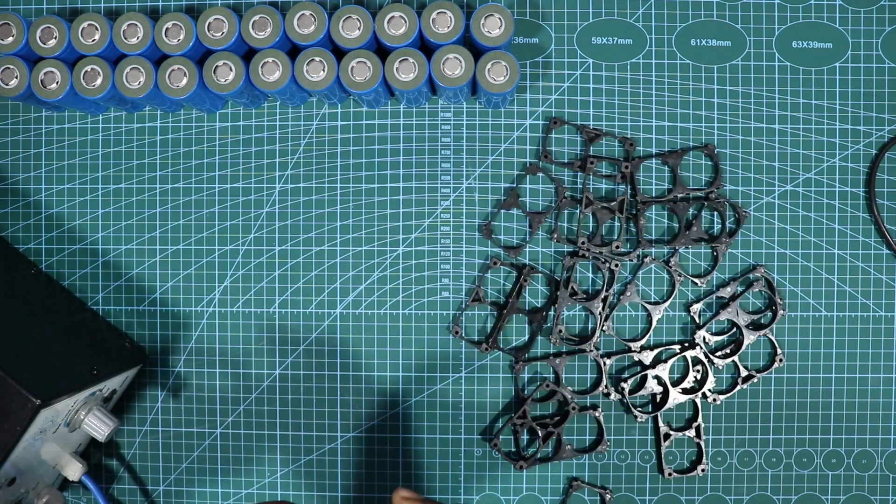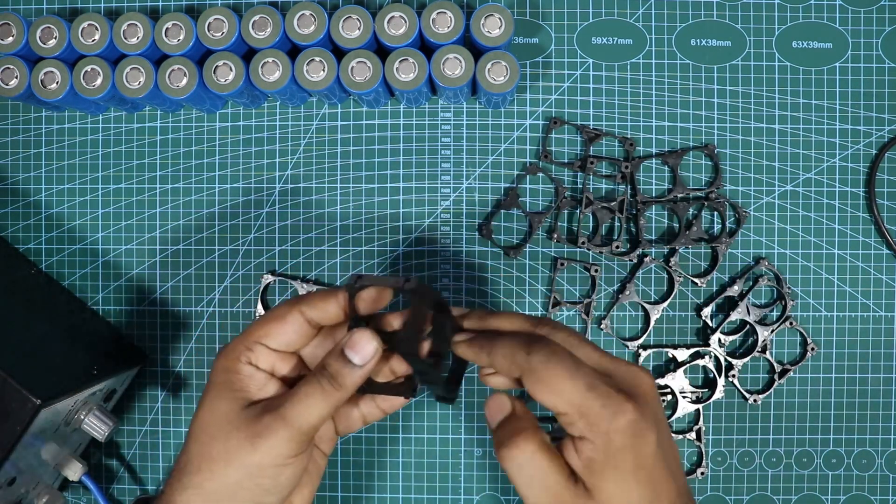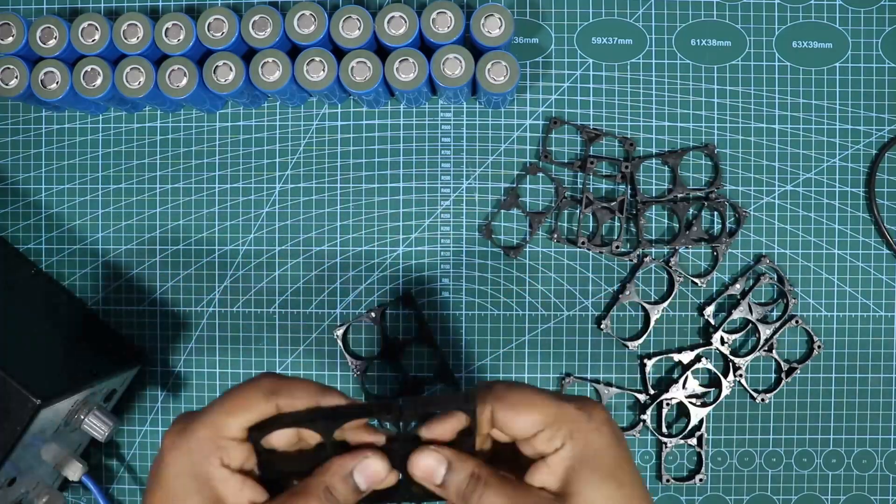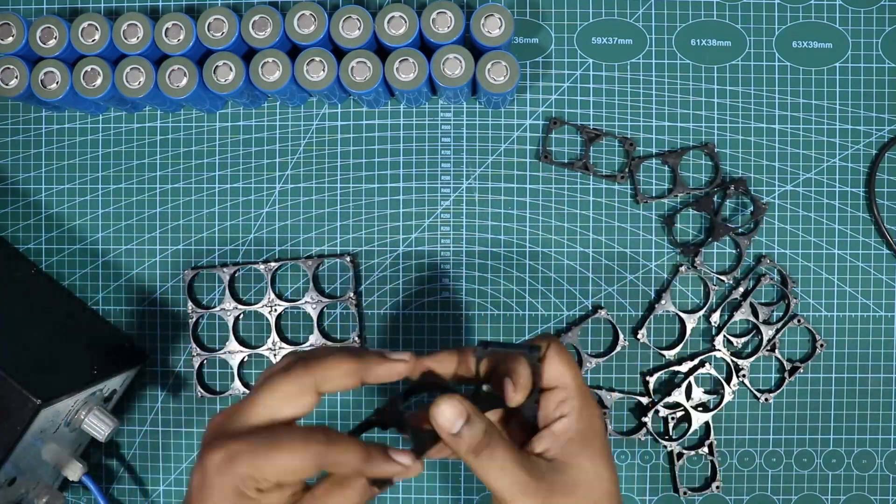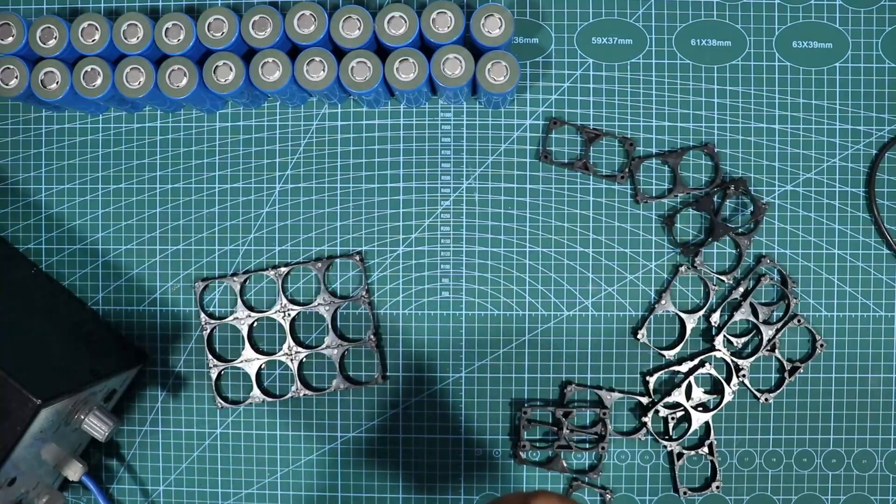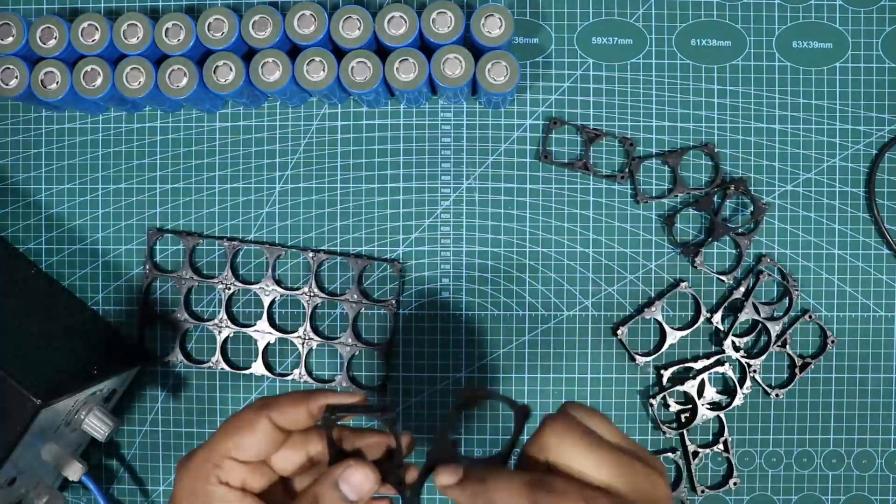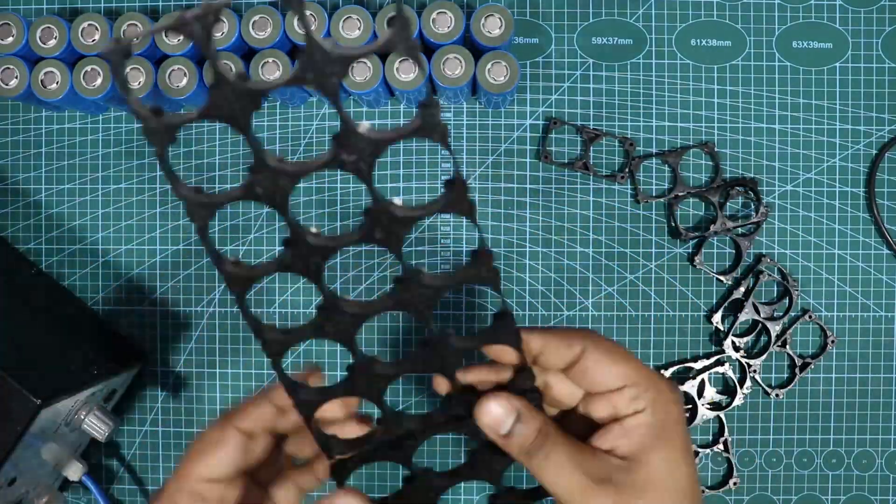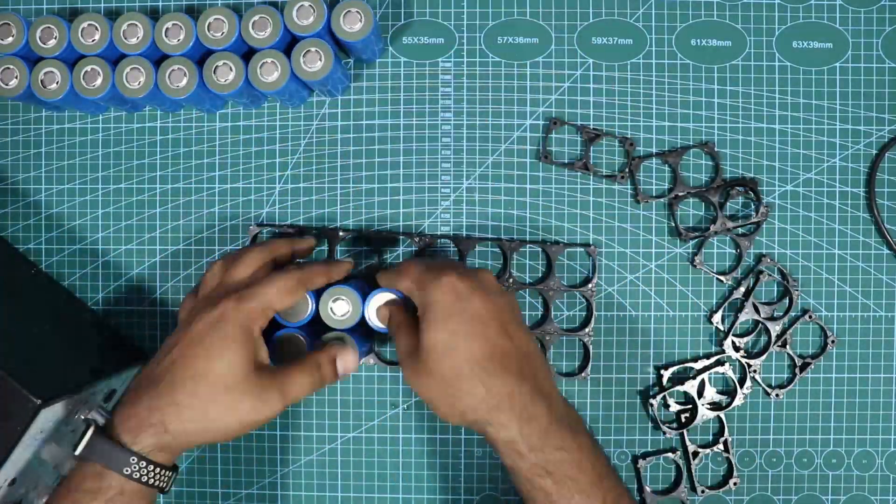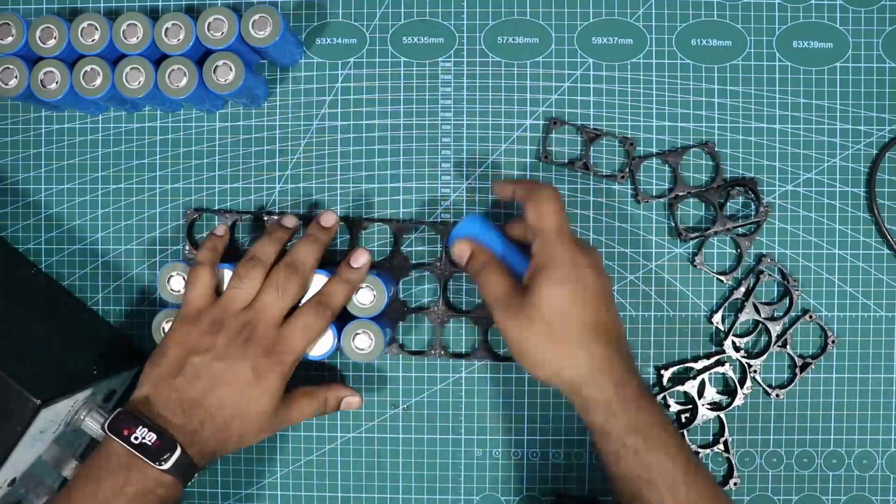The one that I'm making is a 36 volt 2Ah battery pack. The reason why I'm doing 2Ah is because that was the requirement that I received from a customer. If you need any sort of battery packs you could reach out to me. I'll be able to help you out in building battery packs or if you need raw materials you could buy it from our website.